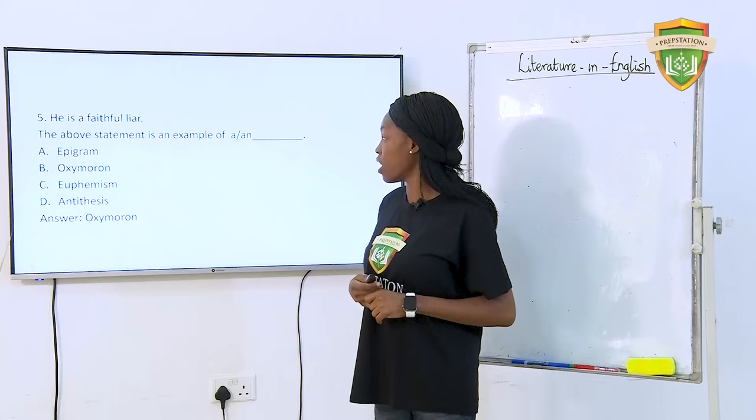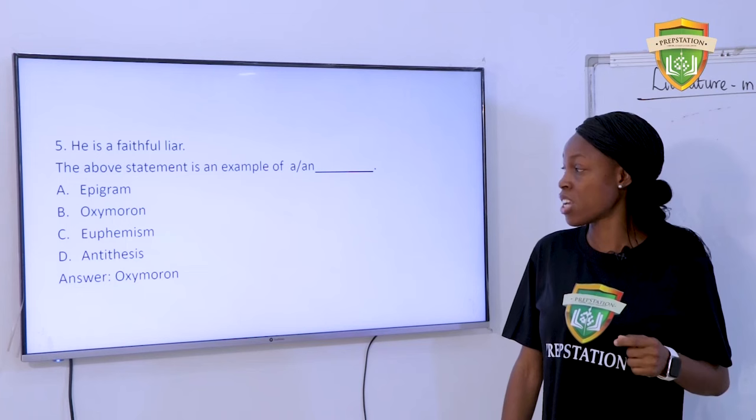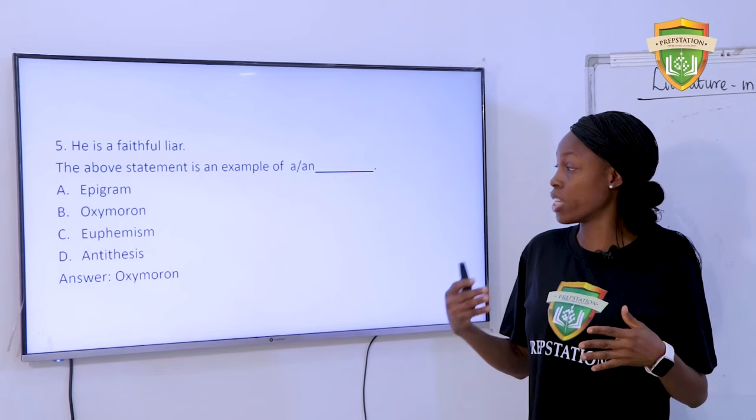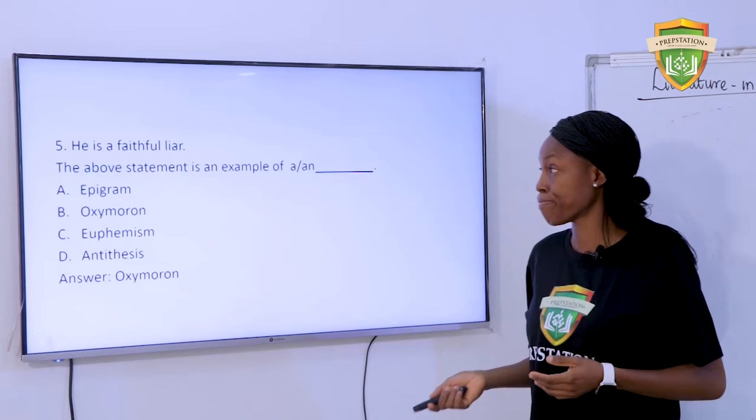Question 5: 'He is a faithful liar.' The above statement is an example of — A. Epigram. B. Oxymoron. C. Euphemism. D. Antithesis. The answer is oxymoron, because you have two contrasting words — 'faithful' and 'liar' — which have been placed side by side.